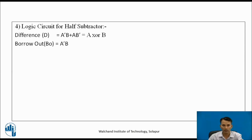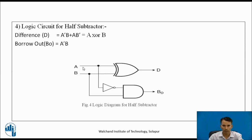Based on the logic equations, we can draw the logic circuit. Difference D = A̅B + AB̅ is nothing but the XOR operation, so it can be written as A XOR B. Borrow-out B0 = A̅B. We require two gates: one XOR gate and one AND gate, along with one NOT gate. A and B inputs are given to the XOR gate which gives us the difference. Input A is given to the NOT gate and its output is applied to the AND gate along with input B, giving us borrow-out. This is the logic diagram for the half subtractor.